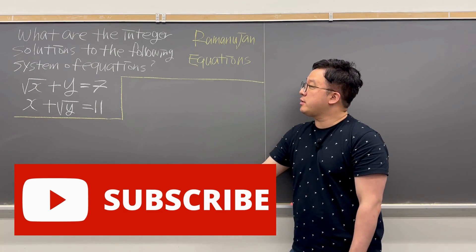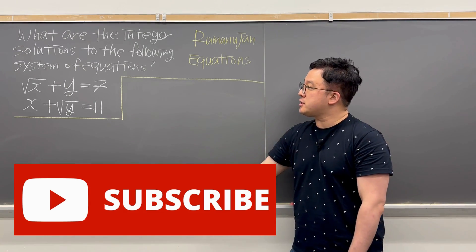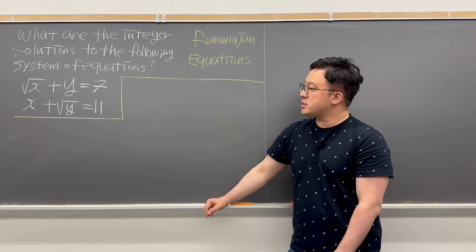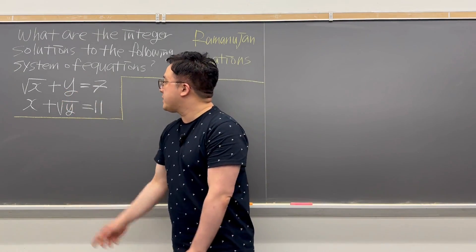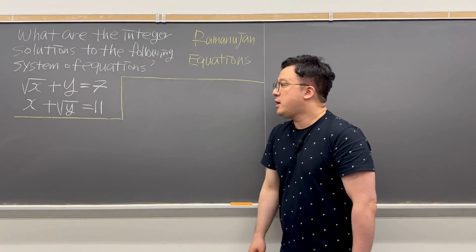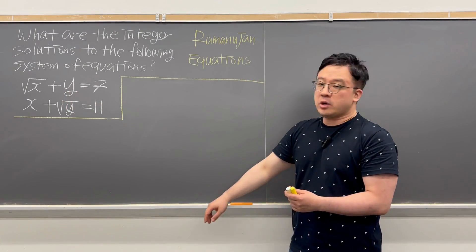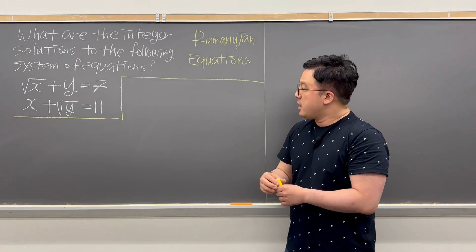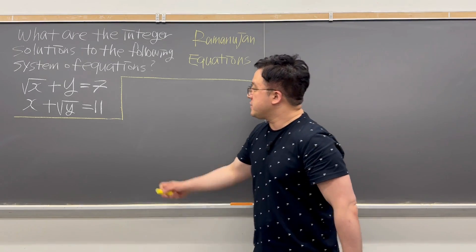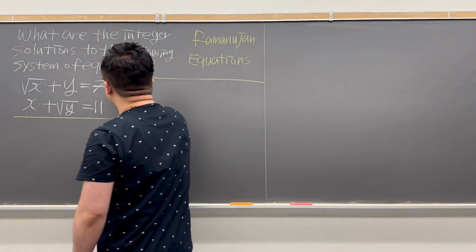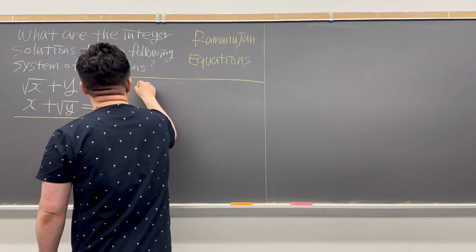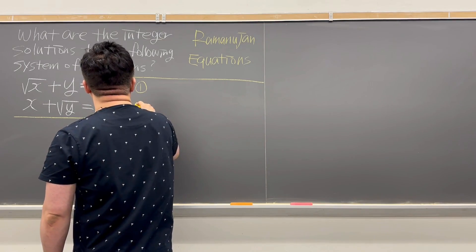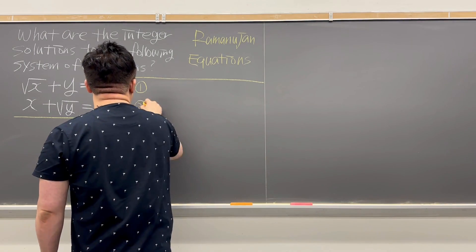The question is: what are the integer solutions to the following system of equations? We have √(x + y) = 7, and x + √y = 11. I'll be calling this equation number 1, and the second one as equation number 2.